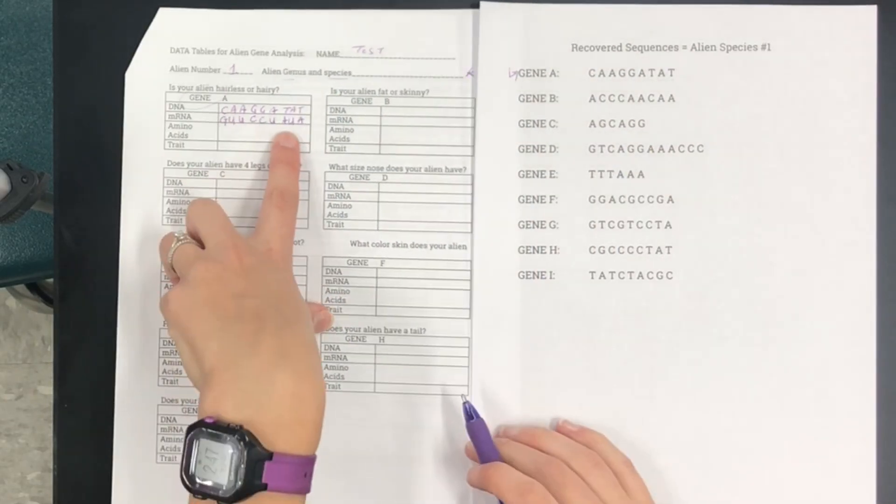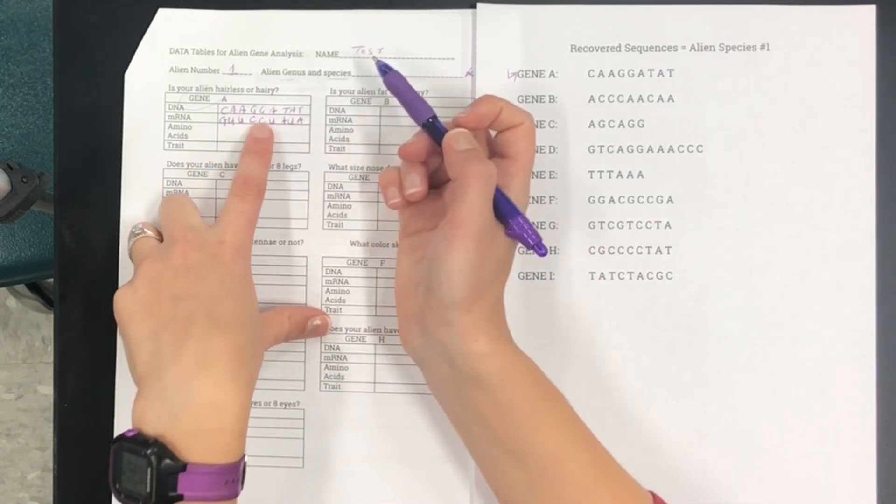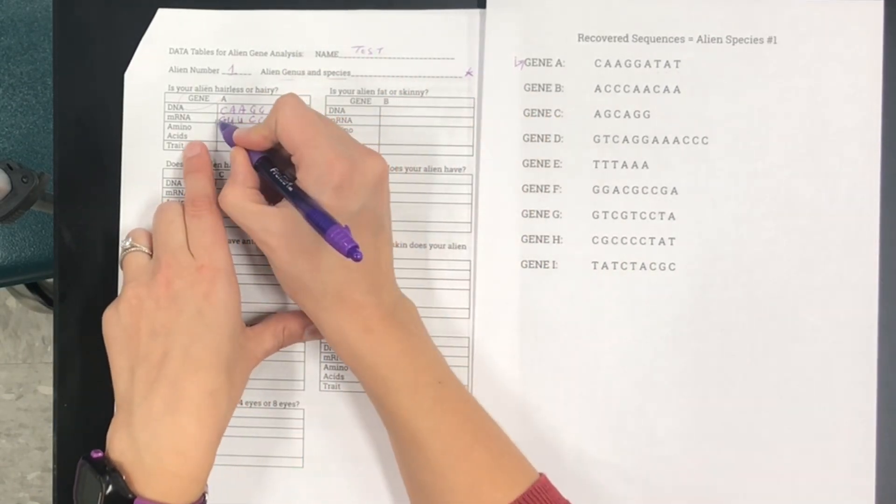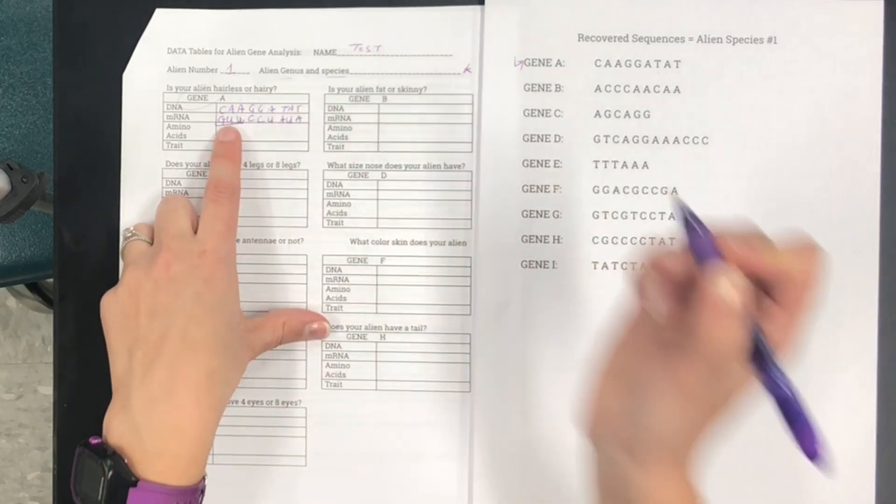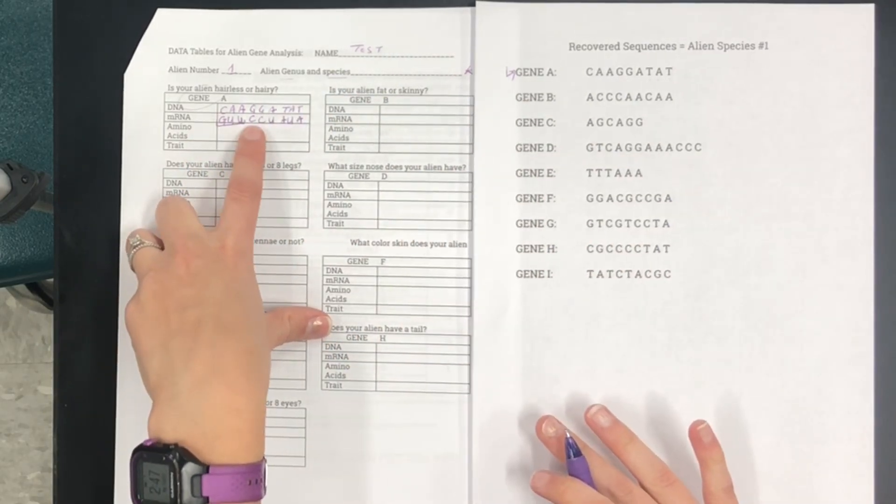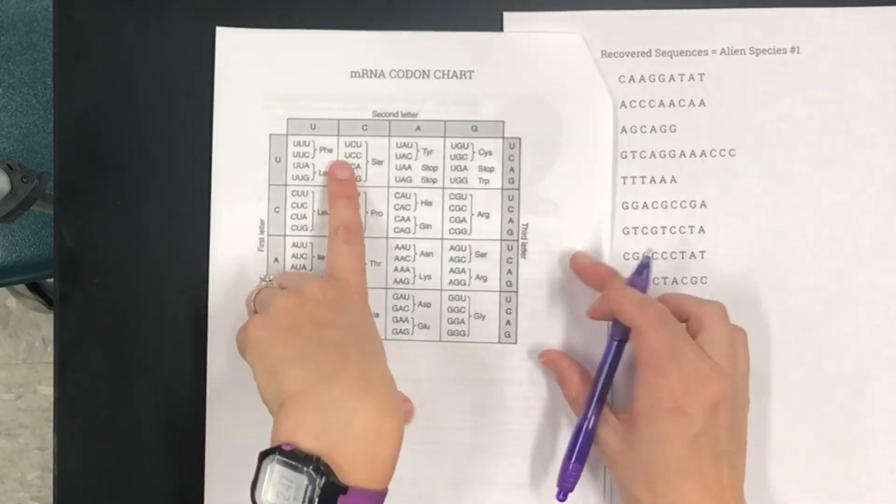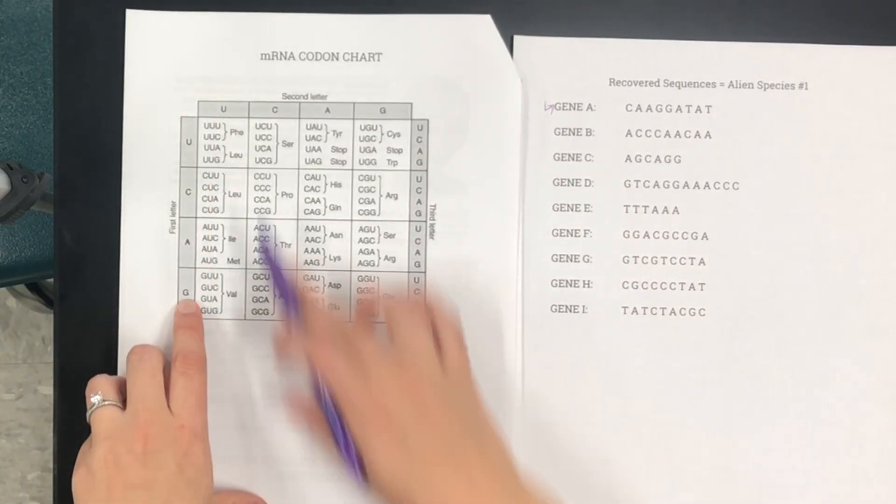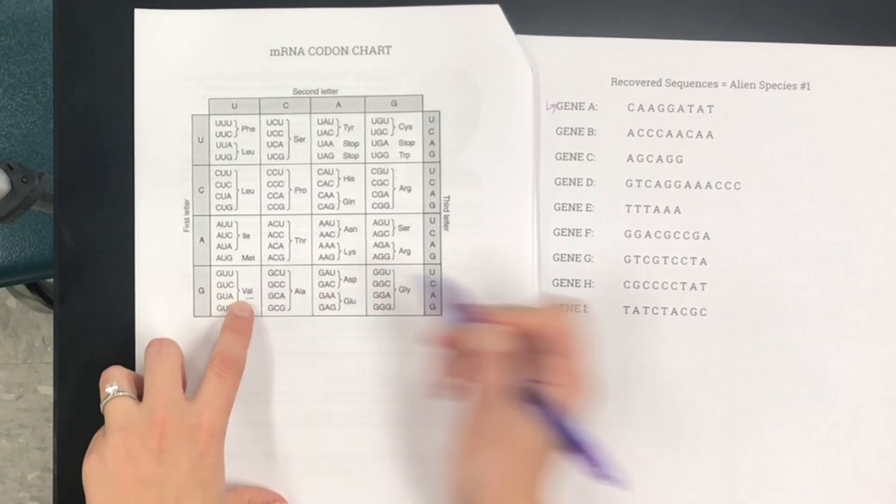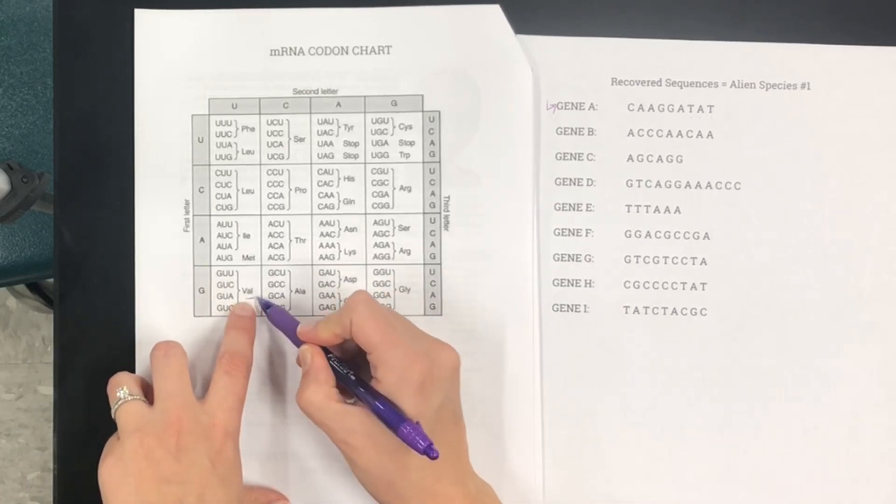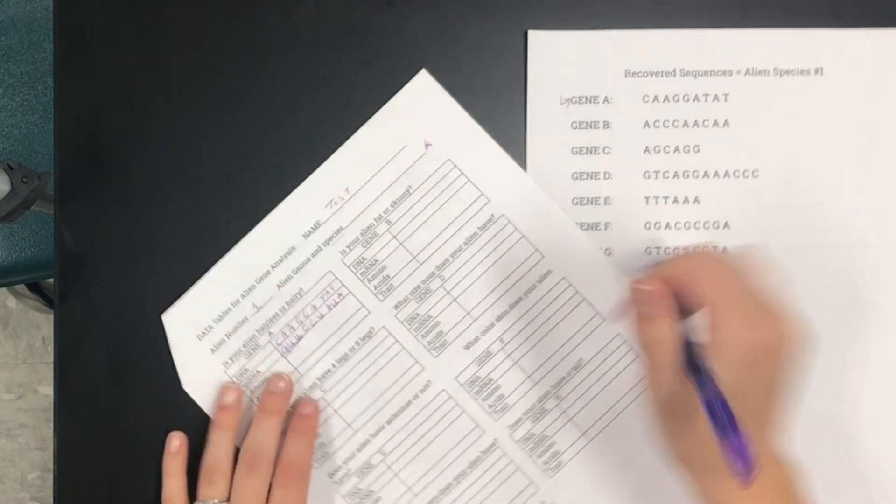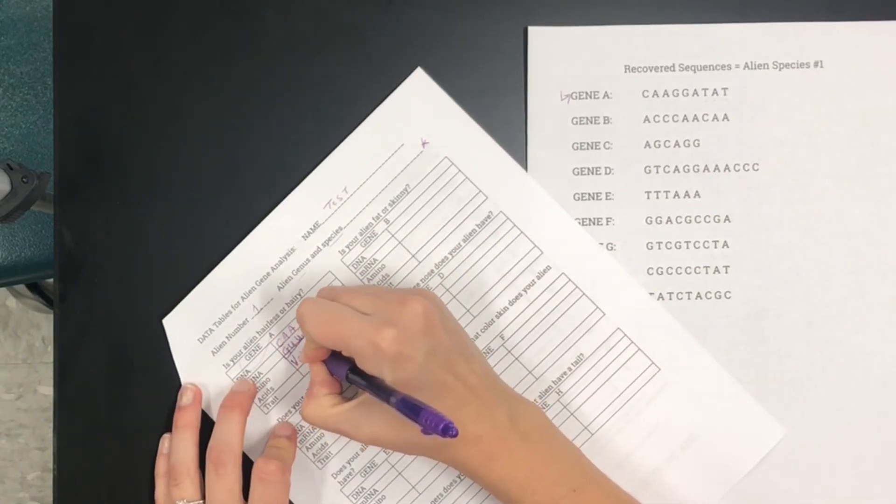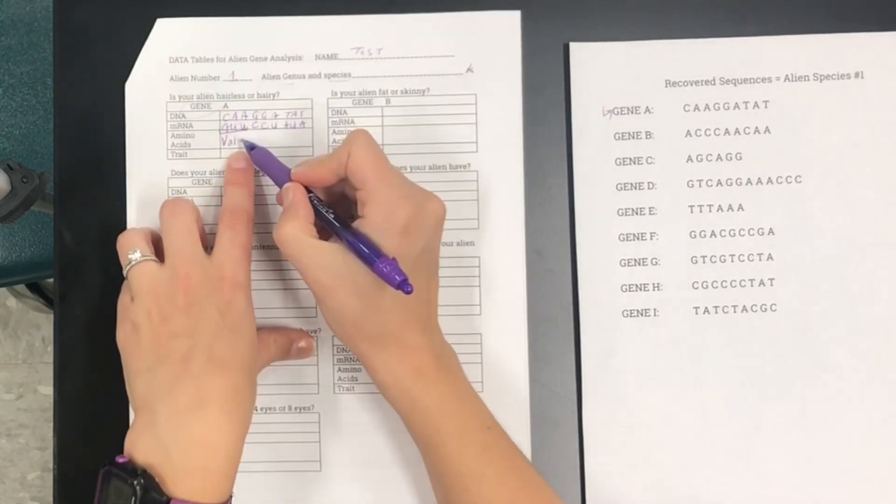So now that we have our mRNA strand we can look and find which amino acids are going to correspond to each of these codons and remember a codon is one group of three nucleotides together. So if we go to our mRNA codon chart, you guys are going to practice using this today, let's find GUU. So we'll look on here and we'll go here for the first letter G, U, U. That is the amino acid valine and VAL actually is just short for valine but we can write VAL as an abbreviation on our sheet. That's our first amino acid in this sequence.